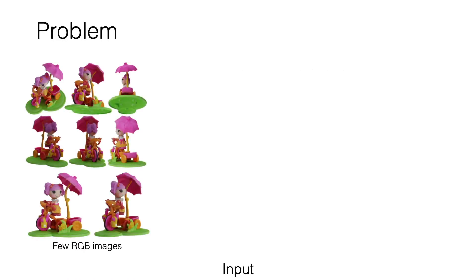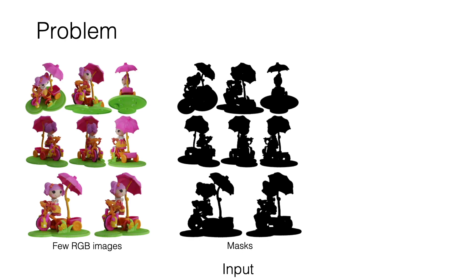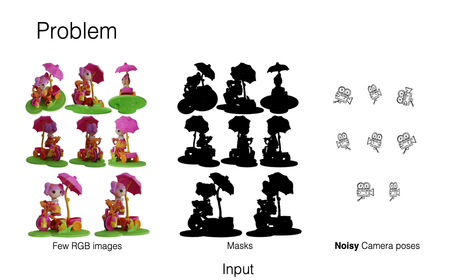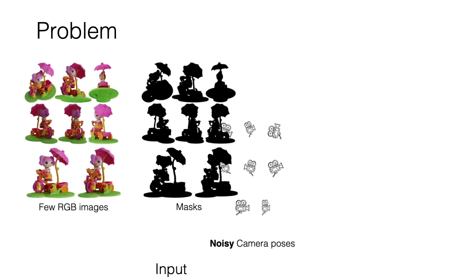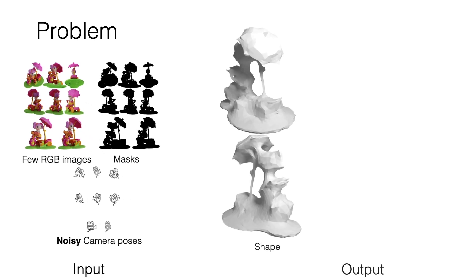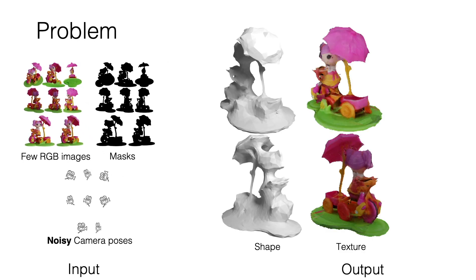The problem we solve is: given as input a few RGB images — here 8 — of a static object with masks and corresponding noisy camera poses, can we reconstruct the shape and texture of the underlying object while also fixing the camera poses?